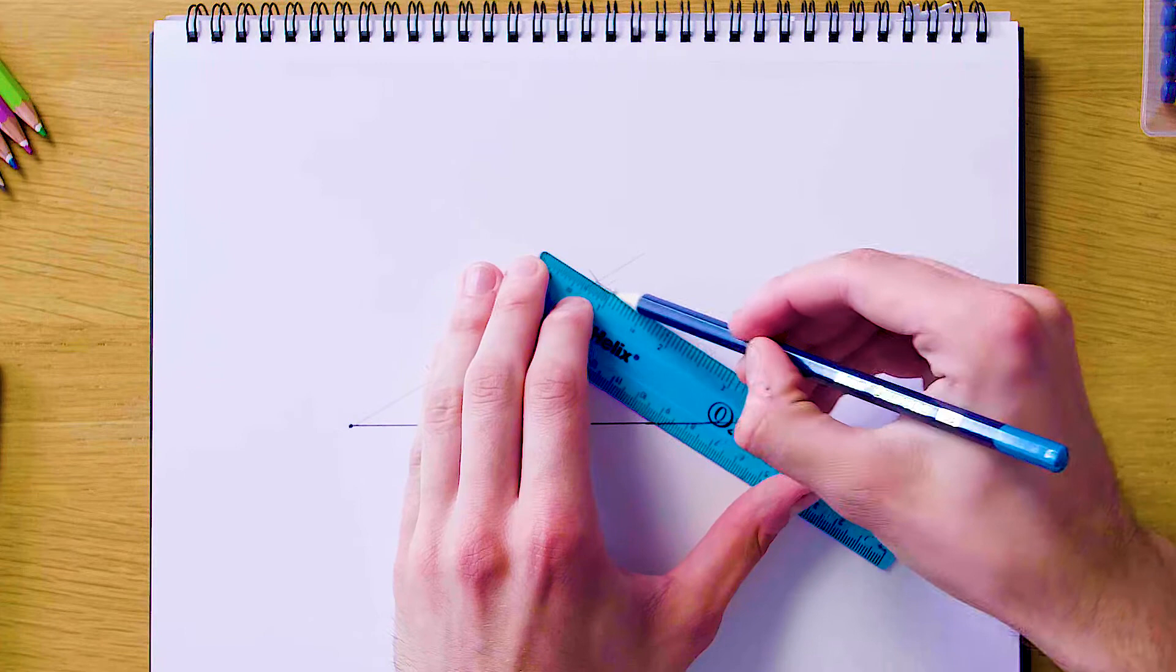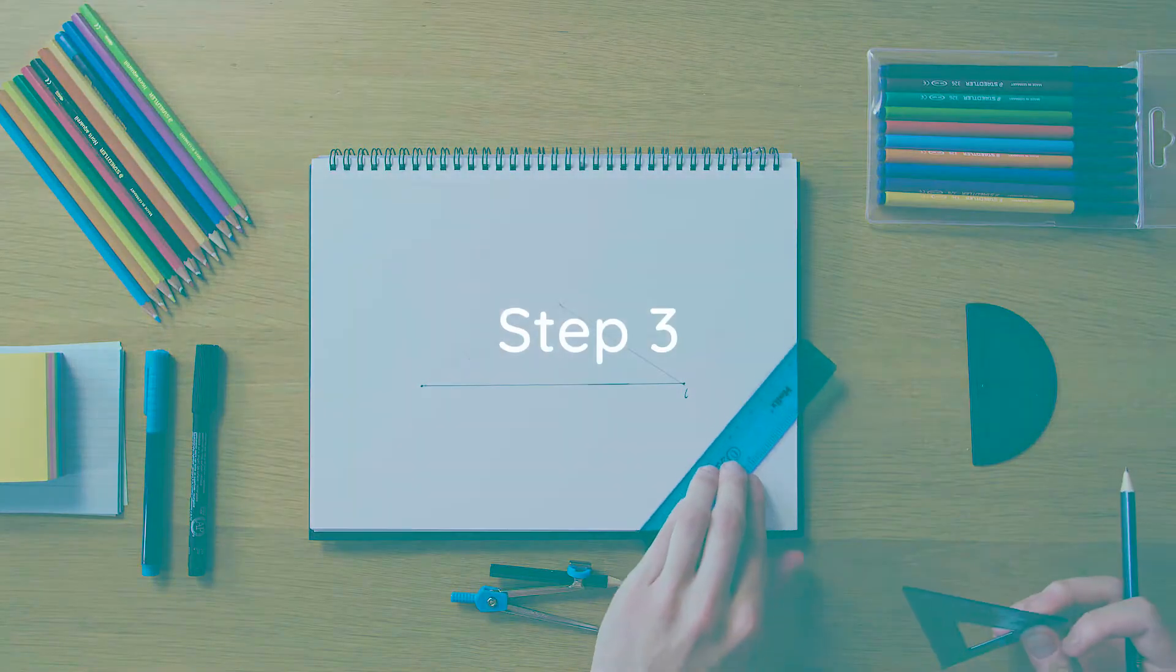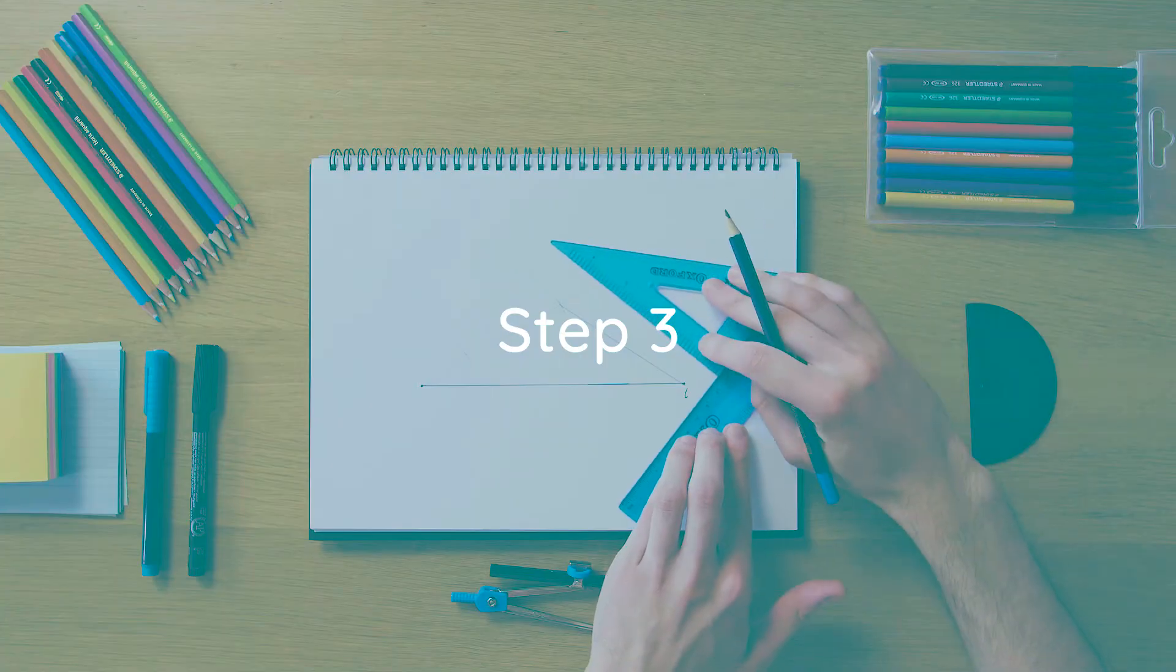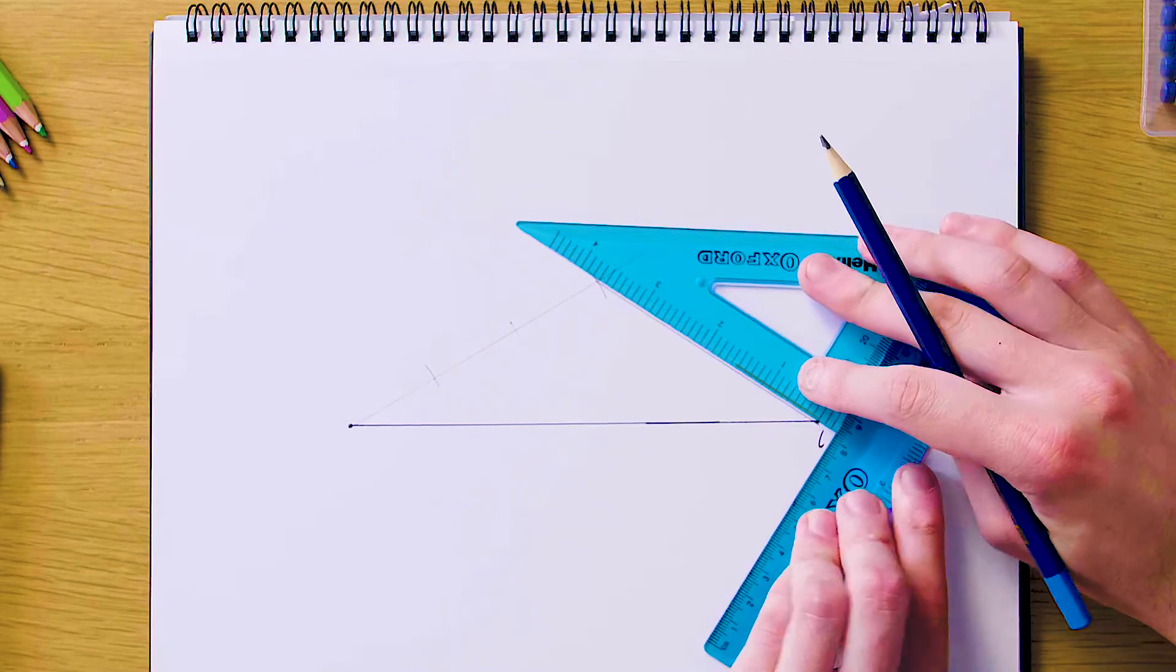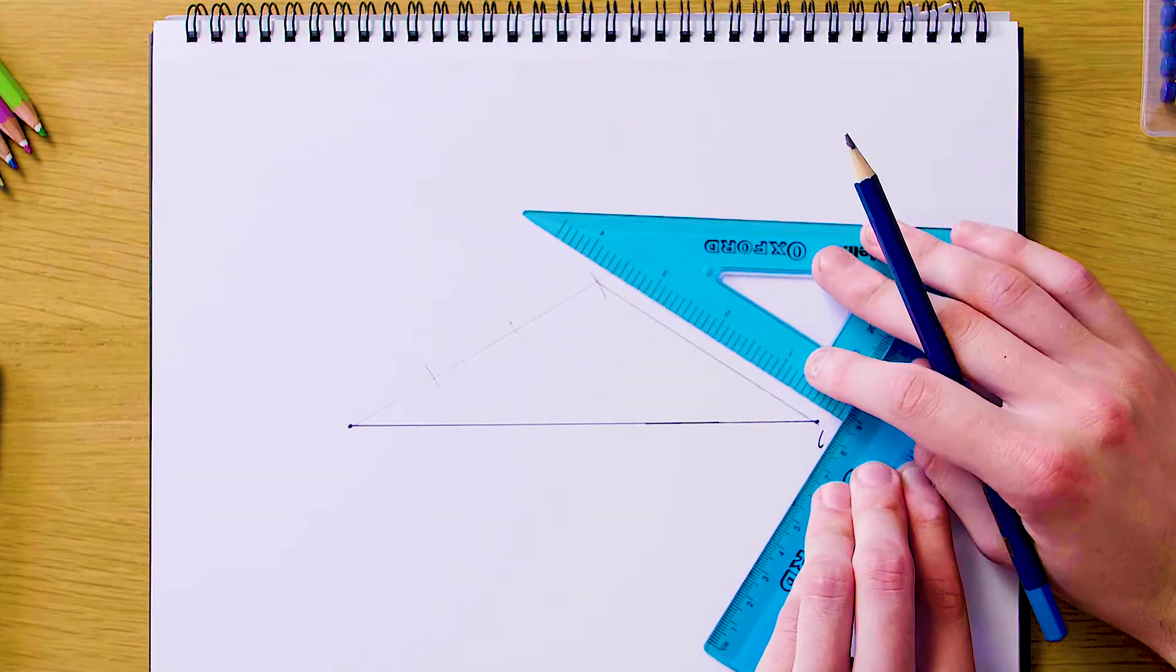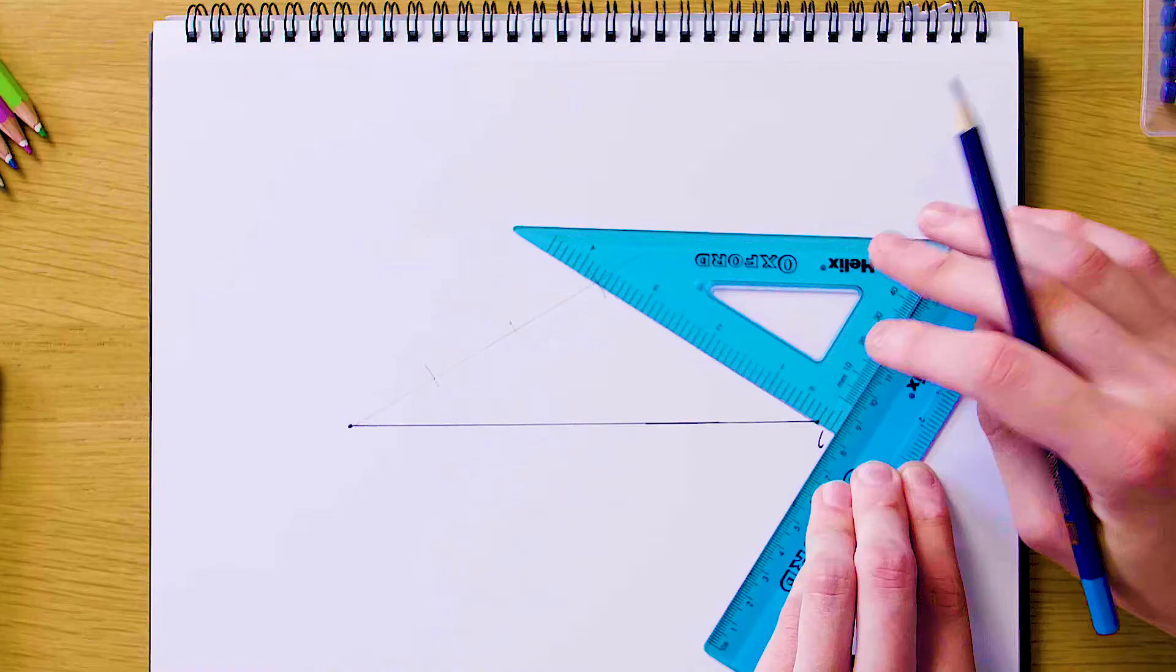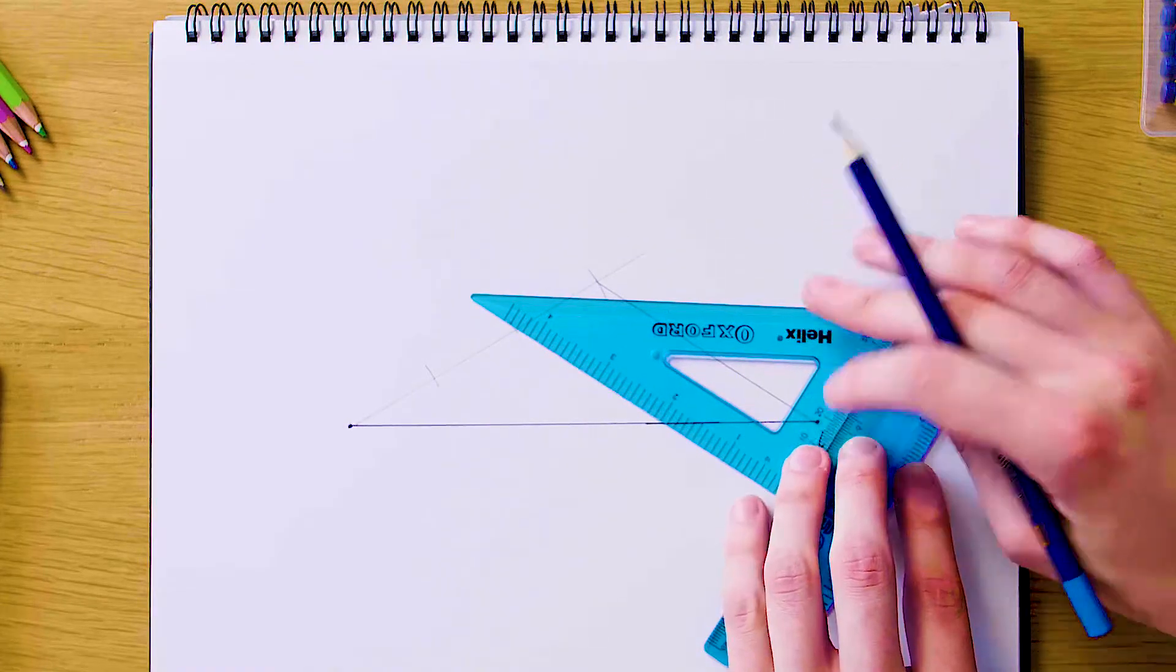So we're just going to use our ruler to do this and join these two ends like that. Now we're just going to get our ruler and our set square and line up our set square perfectly with this line that connects the end of L to the end of our divided line. We're just going to use the fact that our line is divided and preserving this angle that it makes with the end of L to divide our line L into three equal segments as well.